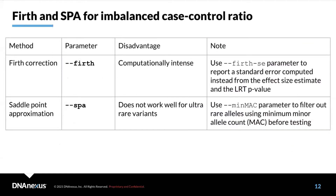REGENIE has different modes: FIRTH and SPA. If you have an imbalanced case-control ratio, you can choose between two methods. FIRTH correction is computationally intensive but good for ultra-rare variants. Saddle point approximation (SPA) is not as computationally intensive but does not work well with ultra-rare variants, so you need to apply minimum minor allele count filtering before using that method.